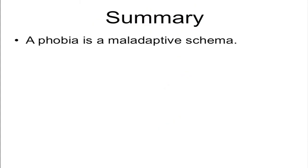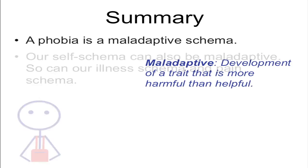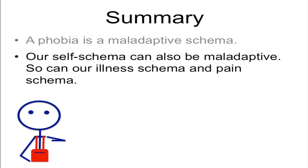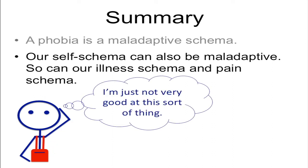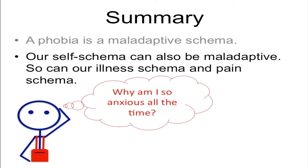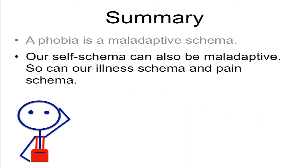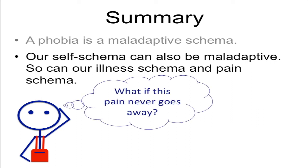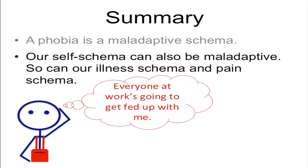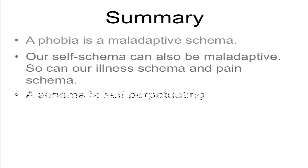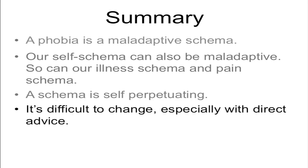Such as when she's grown up and realises that cats aren't dangerous. Schemas can develop maladaptively, and a phobia is a simple example of this. But think about the consequences of our self-schema developing maladaptively — how the beliefs that we hold about ourselves develop, how our emotional responses develop, how our self-talk develops. And think about our illness and pain schemas developing maladaptively, and the scripts that are provided for us by these schemas. All schemas are self-perpetuating, and so is chronic illness and persistent pain. They are difficult to change, particularly with direct advice. But like Tilly's mum, this is most often exactly what we use to change it.